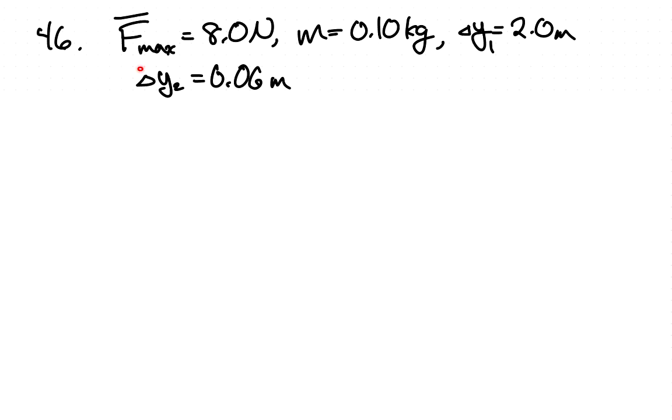So we have our information here: the maximum force allowed on the apple, the mass of the apple, the distance that it's falling, which we'll use to figure out how fast it's going when it hits the ground, and the distance that it sinks into the ground or into the grass.